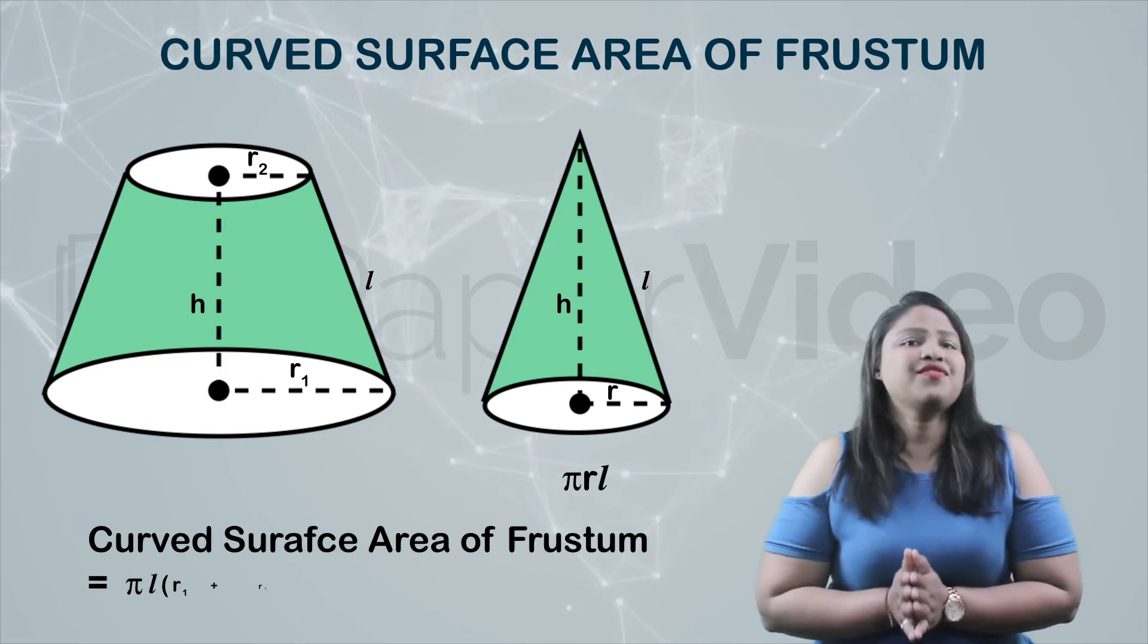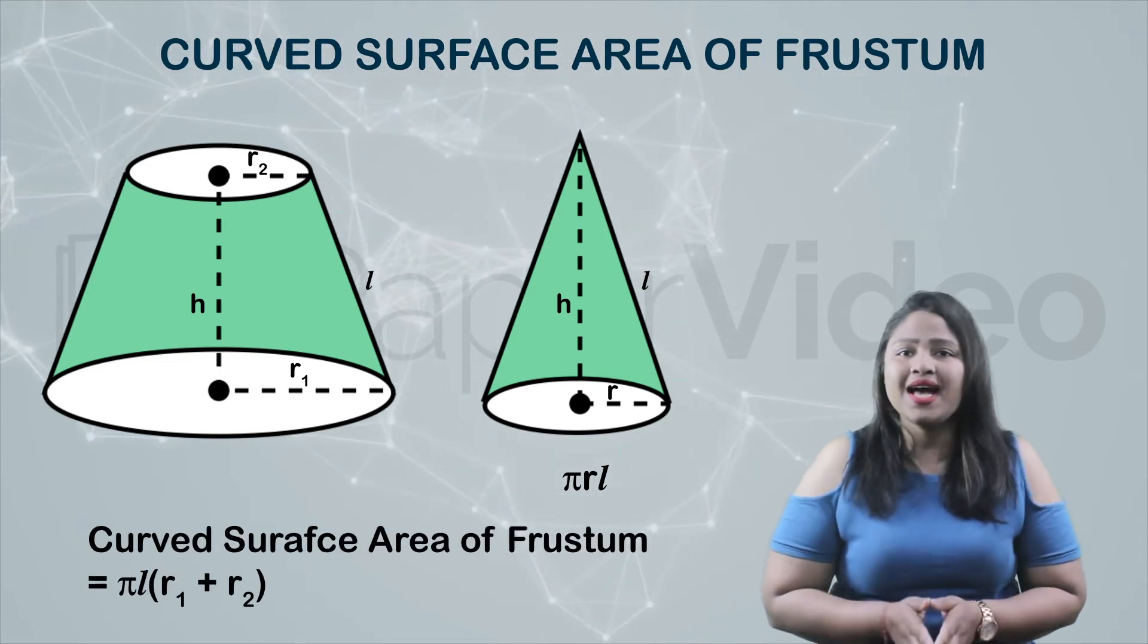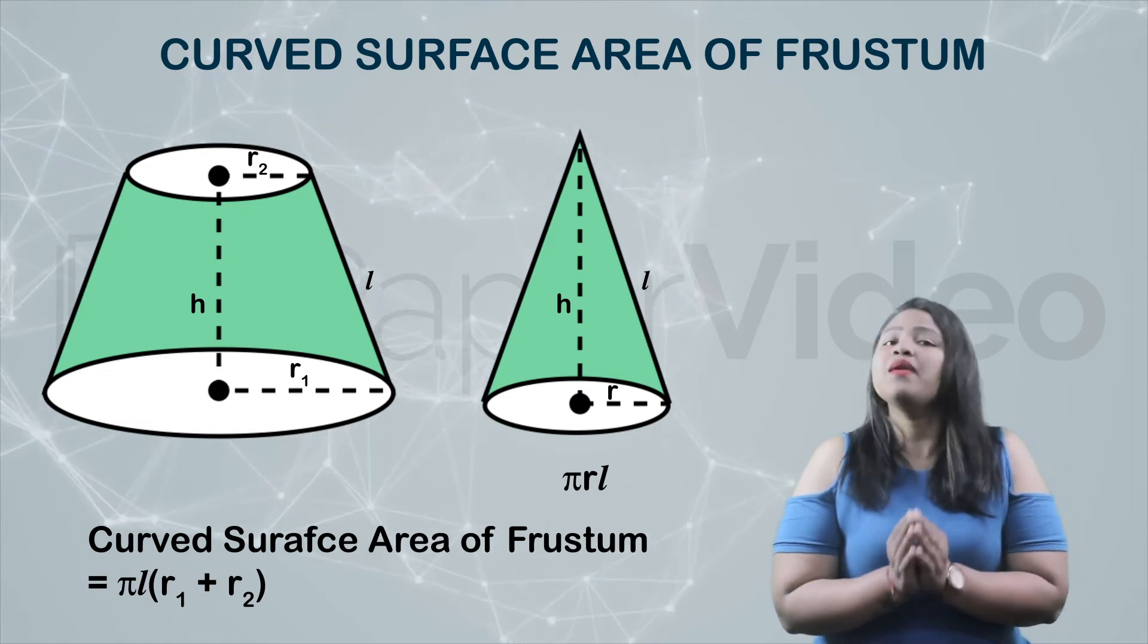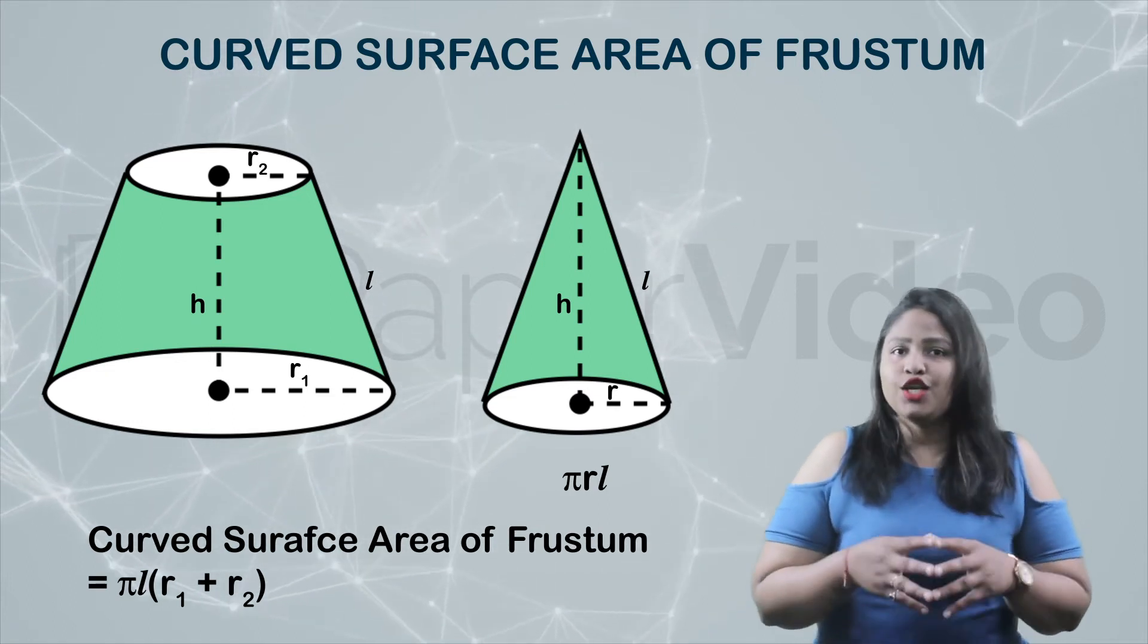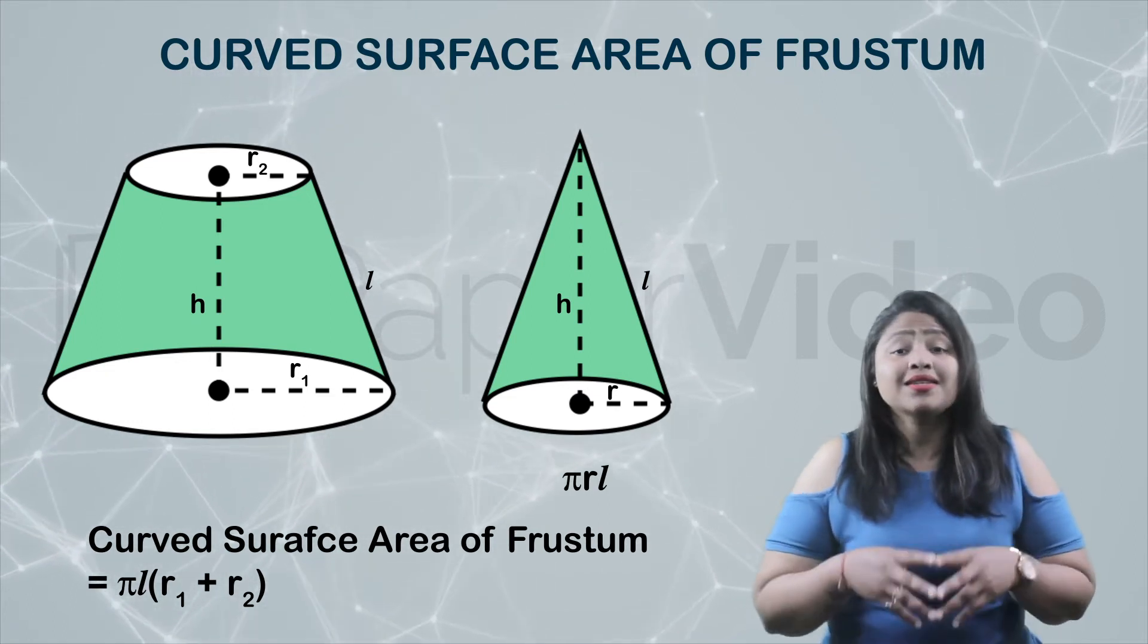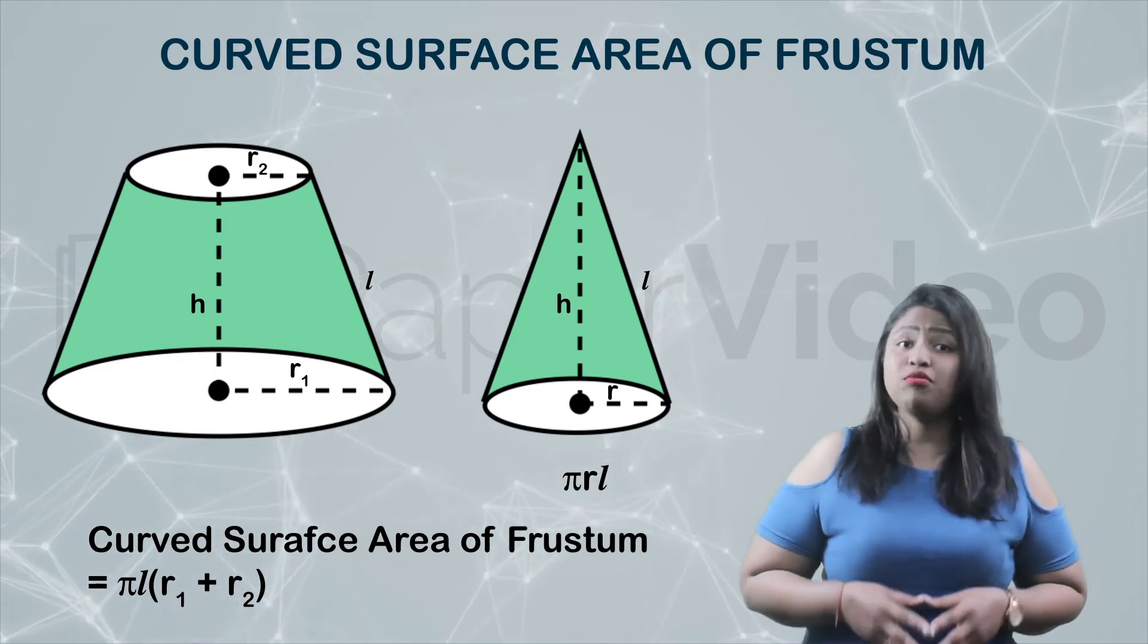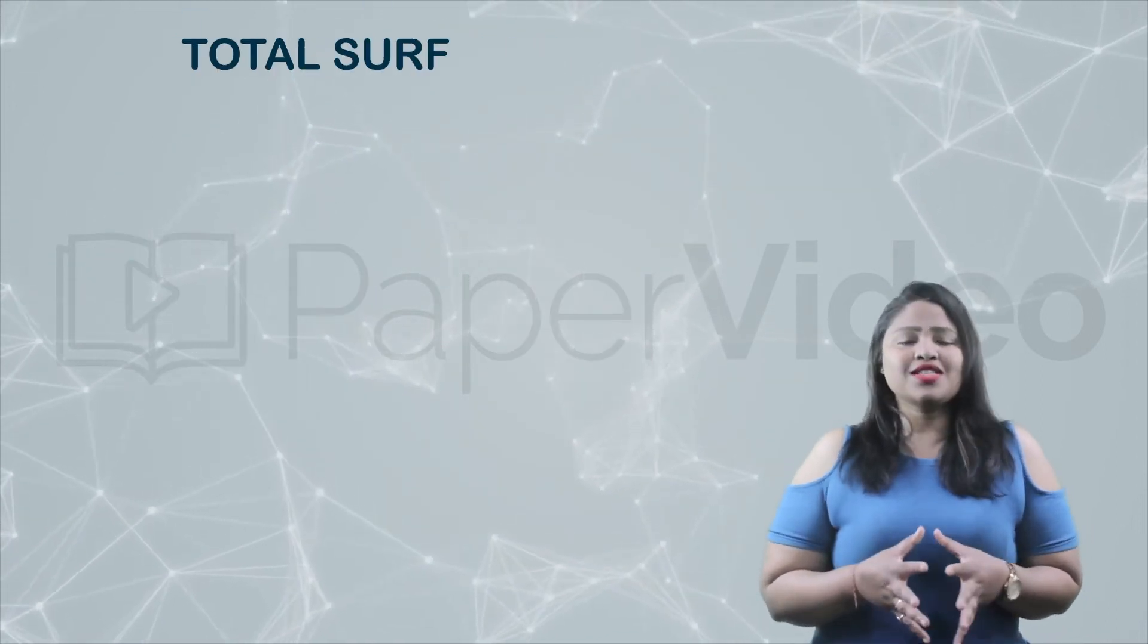Therefore, the curved surface area of a frustum is given as pi l multiplied by r1 plus r2. Using this formula, we can calculate the curved surface area of a frustum of a cone.